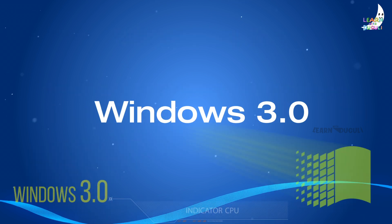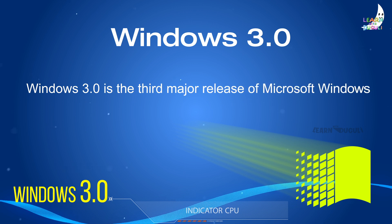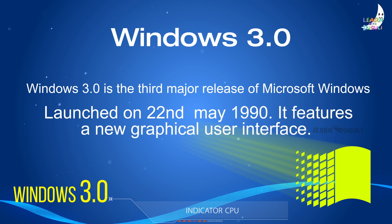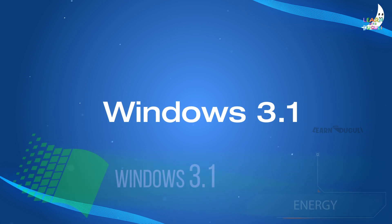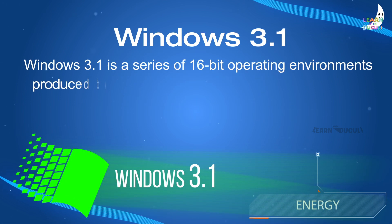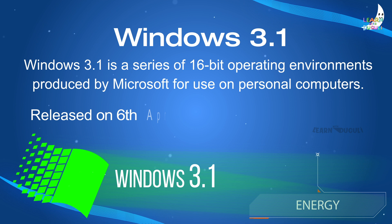Windows 3.0 is the third major release of Microsoft Windows, launched on 22 May 1990. It features a new graphical user interface and is a series of 16-bit operating environments produced by Microsoft for use on personal computers.